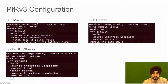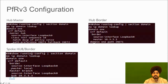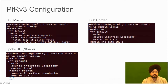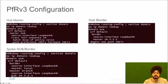In our case, R9 serves dual functionality — it acts as both a border router and a master controller at the spoke site. We define domain 'one', declare this router as 'border', and set its router ID via 'source interface loopback 0'. We tell this border router that its master is the local router. We also configure the three commands that identify the centralized master controller at the hub site.